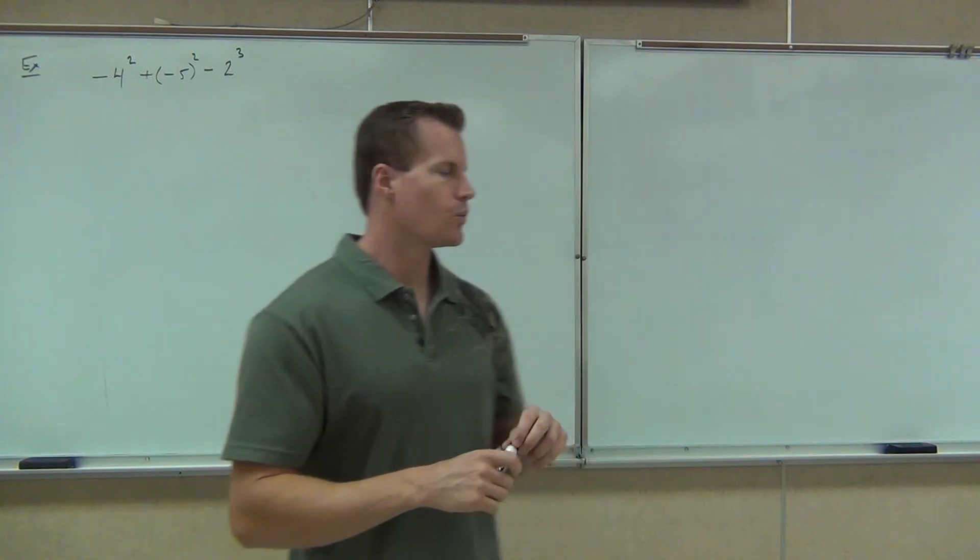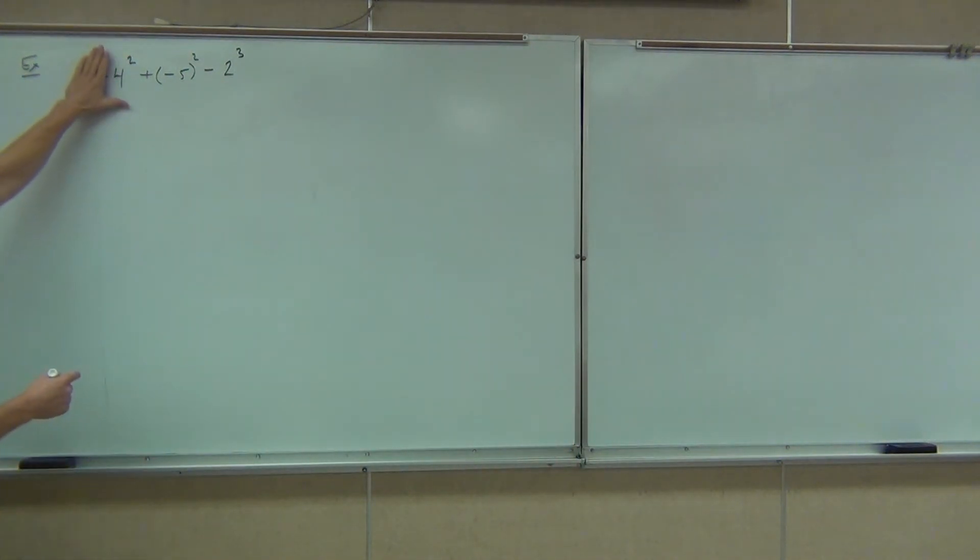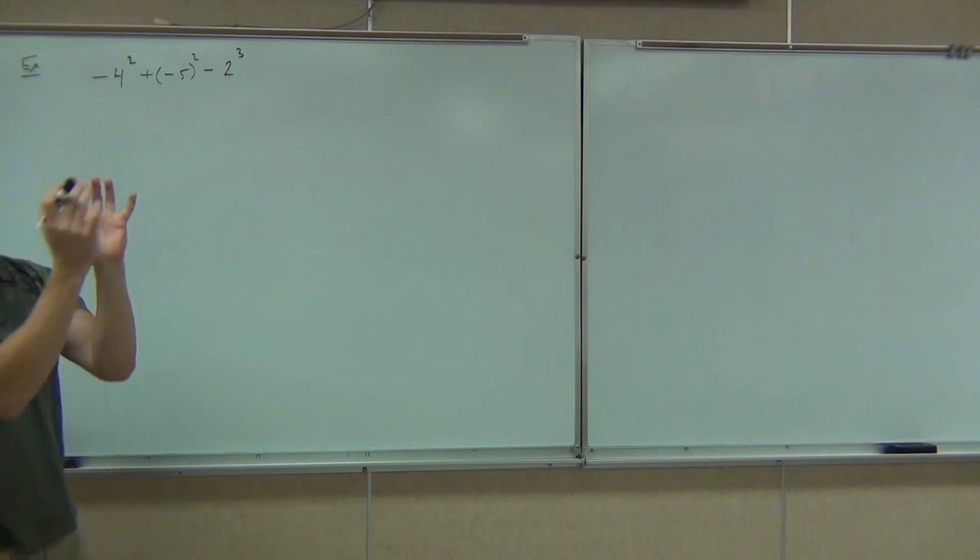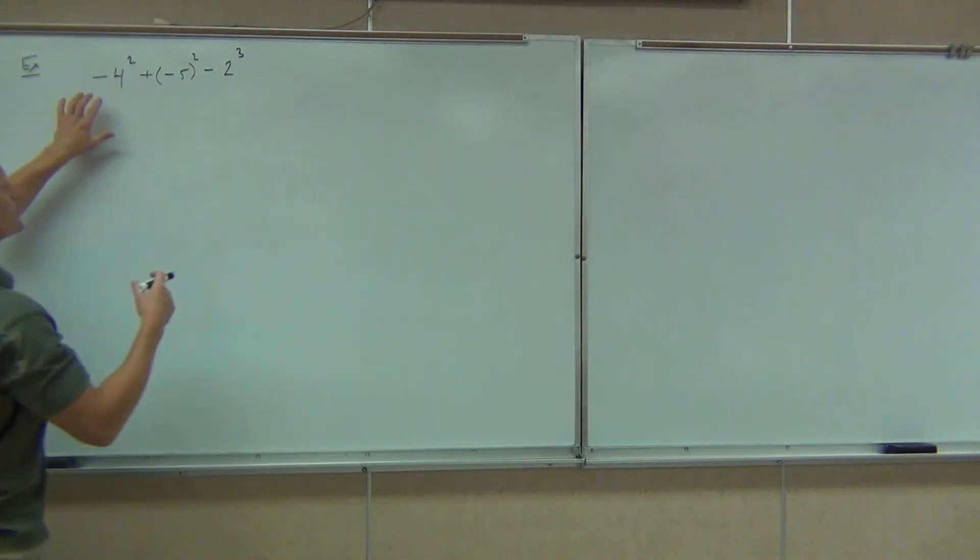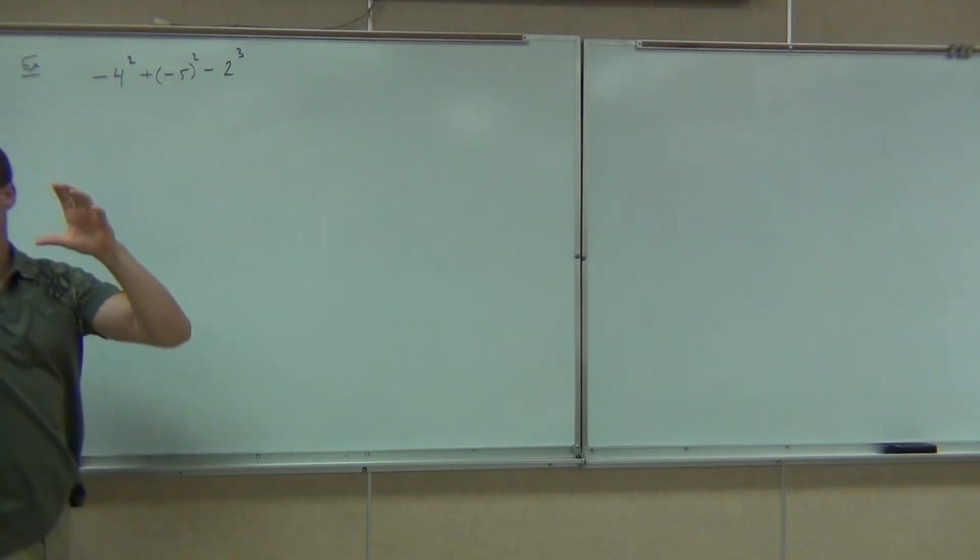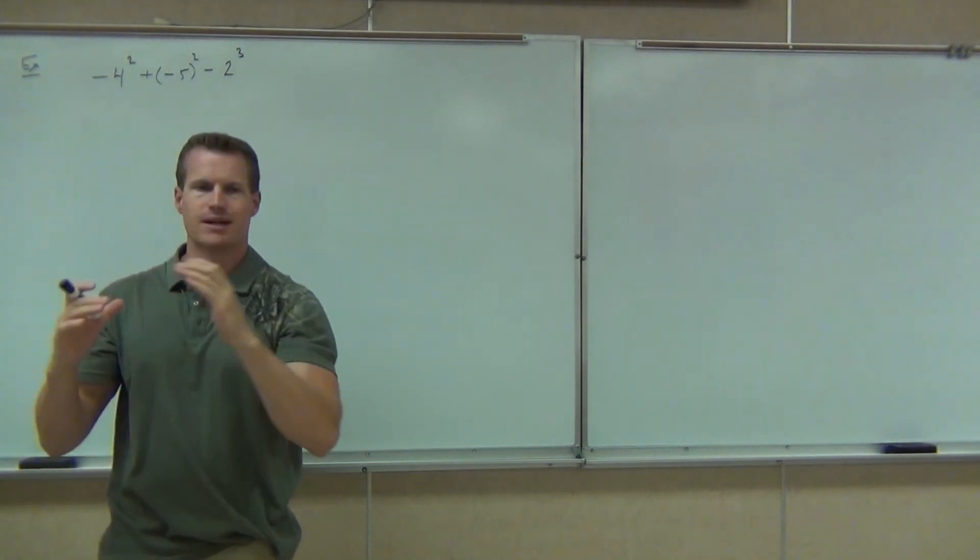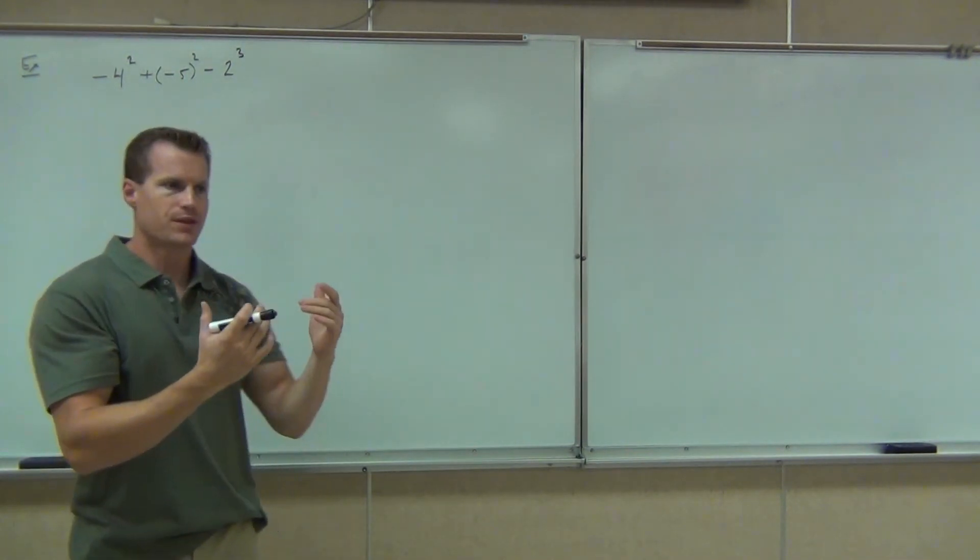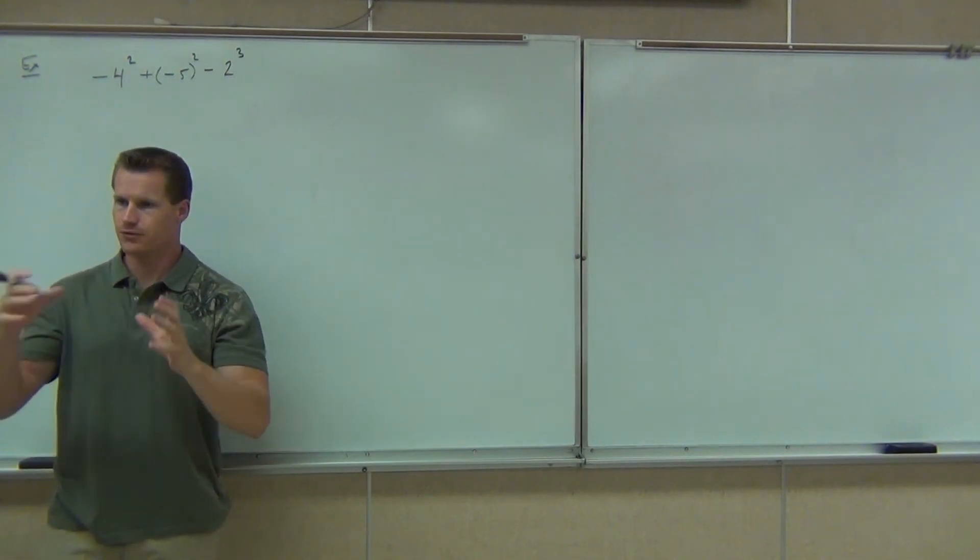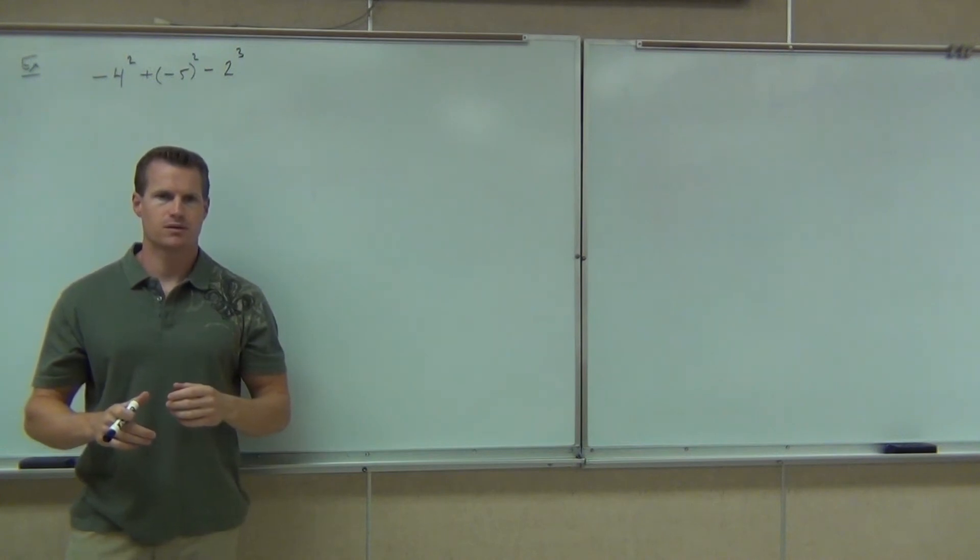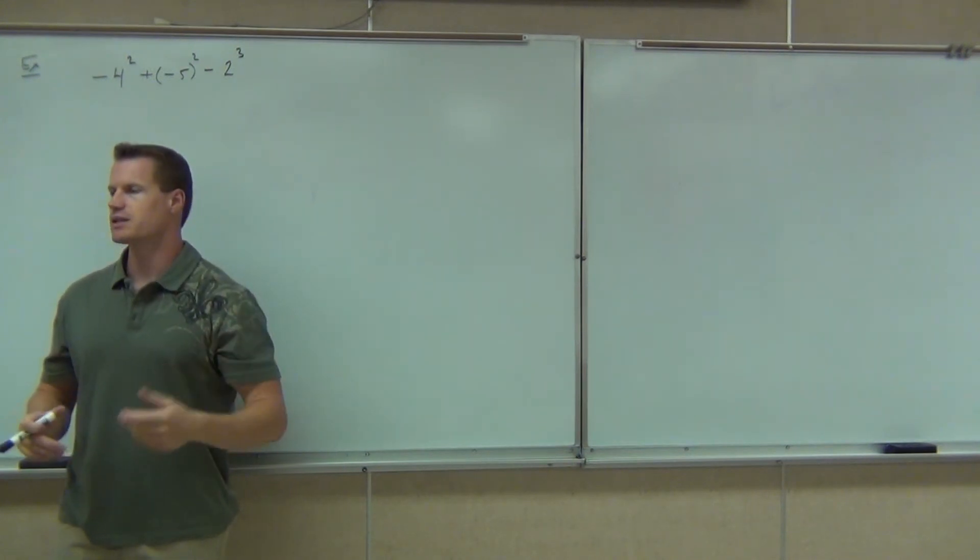So what this says to us, this is the one that says 4 squared. This is where I think you saw me cover it up. If there's no parentheses here, that negative is not included with the 4. I know that's hard to understand for some people. You can't include it. Look at the difference between this example and this example. Do you see how the parentheses is grouping the negative around the 5, yet it's not grouping around the 4. What this says is negative, pause, 4 squared. Negative 4 squared. How much is 4 squared? 16. Negative 16. Negative 16. That's what that says.